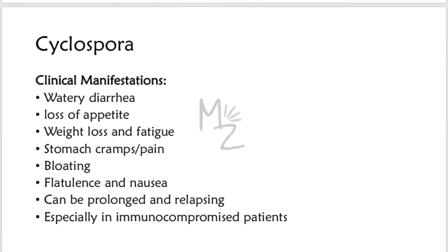Clinical manifestations of Cyclospora include watery diarrhea, loss of appetite, weight loss and fatigue, stomach cramps and pain, bloating, flatulence, and nausea. This infection can be prolonged and relapsing, especially in immunocompromised patients.